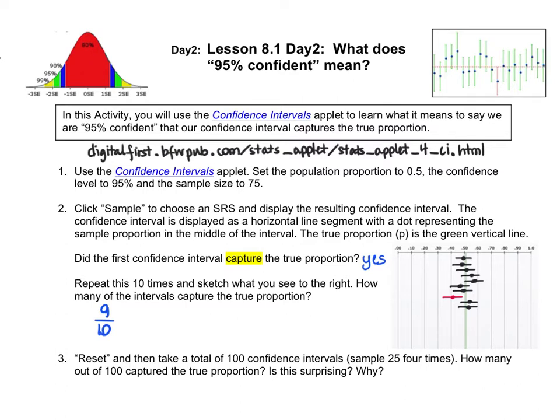The next instruction is to reset — that's the red button on your applet — and then take a total of 100 confidence intervals. You can do that by taking a sample of 25 four times. Once you do that, it tells you out of the 100 total samples that you took how many hit the actual population proportion, or that green vertical line. On mine, I got 98%.